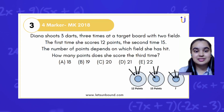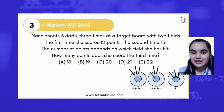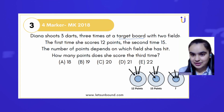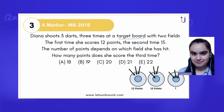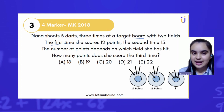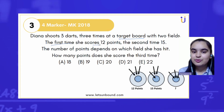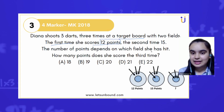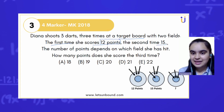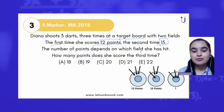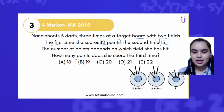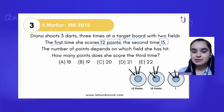Here is the question: Dinah shoots three darts three times at a target board with two fields. The first time she scores 12 points, the second time 15. The number of points depends on which field she has hit. How many points does she score the third time?